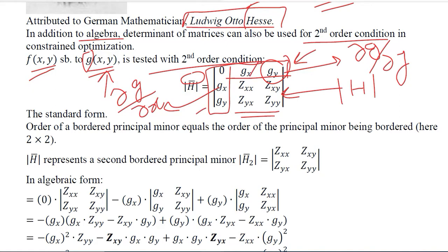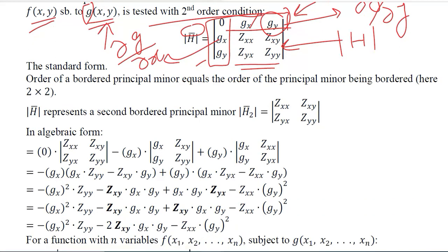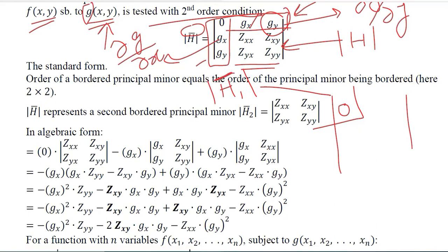We will also do a numerical example, but before that we can try to put it in some sort of algebraic form. This is actually the standard form of the bordered Hessian determinant. What we can observe here is that we have a 2×2 determinant that we will be solving at the end, because the first principal minor will disappear. Because if I try to focus on this determinant, the first term is 0, so H1 is already 0.